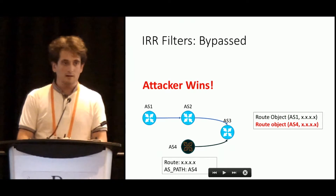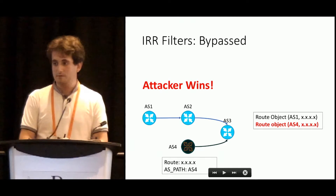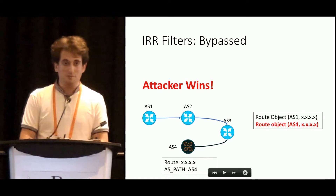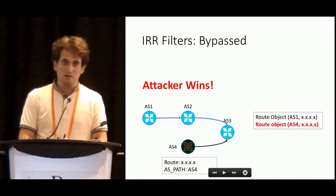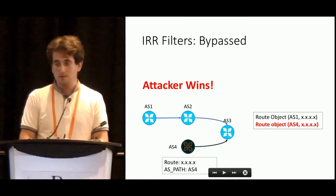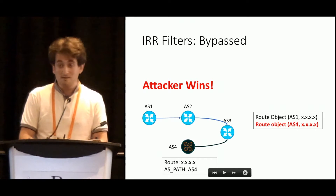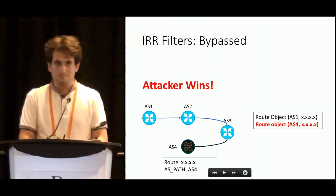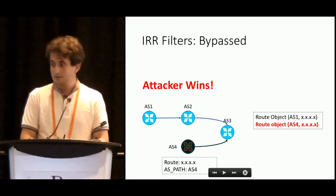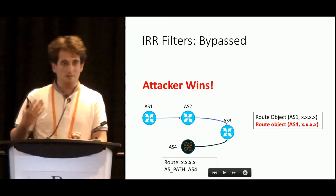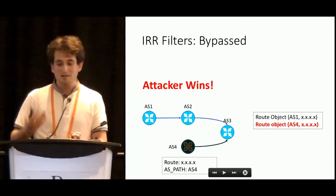Unfortunately, there are a lot of ways to bypass IRR filters. There is a number of databases where you can create route objects without any authorization. You can add any Autonomous System in your AS-Set and there is never authorization — you can even add Google's AS-Set or Level 3's AS-Set and it will be okay. There is no problem to bypass IRR filters, and most of them are already outdated.